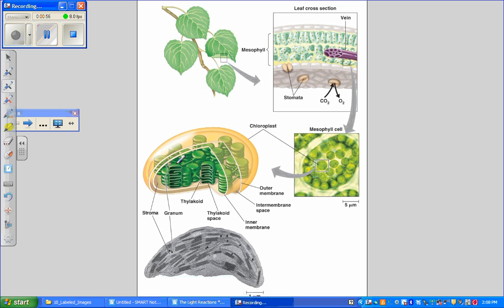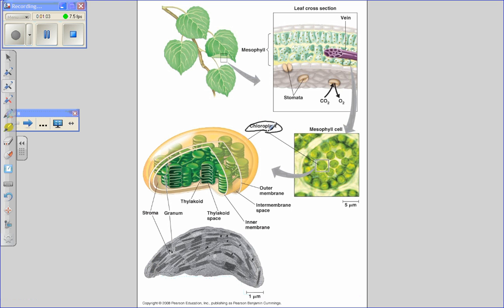Looking at our picture we can see the chloroplast and notice that it has a double membrane, an outer membrane and an inner membrane.